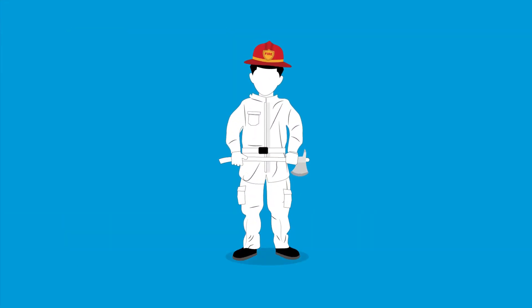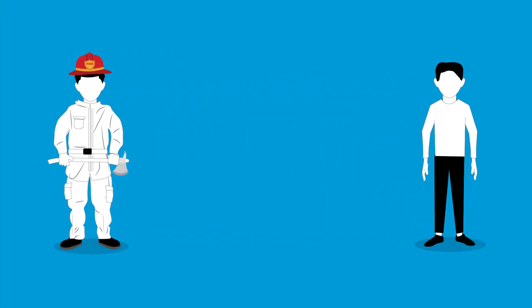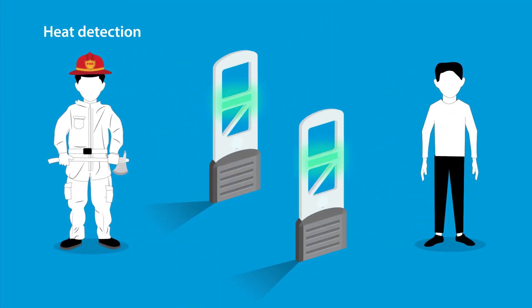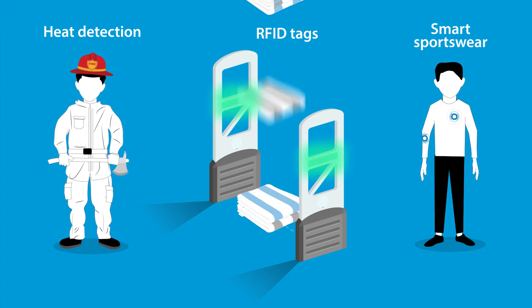But smart textiles benefit more industries besides health care. They are also used for heat detection in fireman's suits, in RFID tags, and smart sportswear.